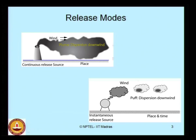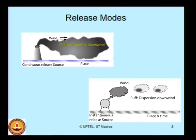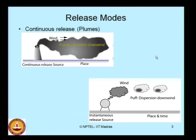These pictures show the plume model and the puff model. The puff model is for instantaneous release from a source — the release disperses in the downwind direction. For continuous release, such as water release coming from a source continuously, the material keeps dispersing in a larger and larger area downwind. To capture this kind of dispersion, we use the plume model. The plume model is used for continuous release, whereas the puff model is used for instantaneous release.